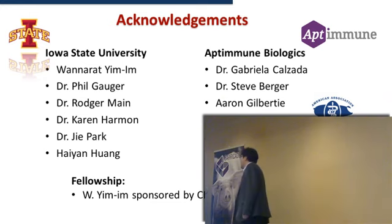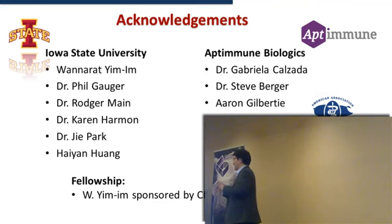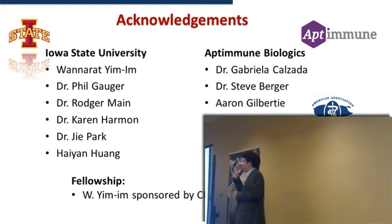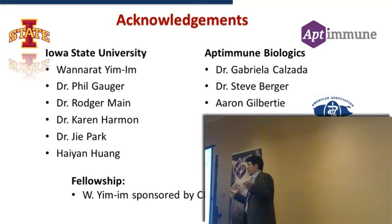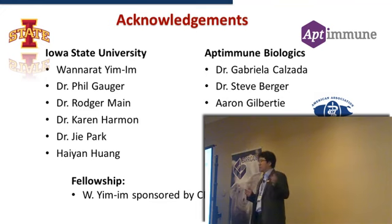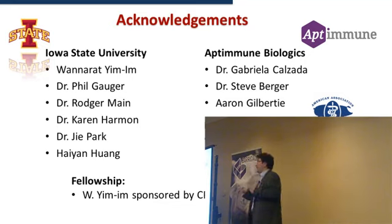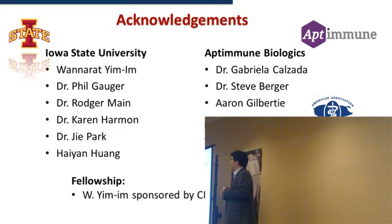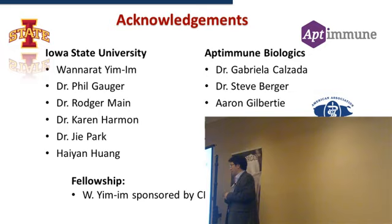Question from audience: Have you done any analysis of the viruses that grew — as to what lineage they are? Dr. Zhang: Very good question. Yes, we have that data. We haven't done statistical analysis yet to see the correlation, but the majority of PRRS-positive samples in the U.S. belong to lineages 1, 5, 8, and 9. There are nine lineages worldwide, but some are only present in Asian countries. In the U.S., preliminary analysis shows lineages 1 and 8 are more common. This analysis is in progress.